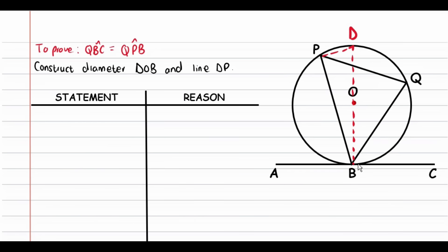Now focus on the tangent BC. We're going to name the angles here. The first angle is angle QBC, and we also have angle OBQ. We're going to name angle QBC as B1 and angle OBQ as B2. Likewise, we name angle DPQ as P1 and angle QPB as P2.